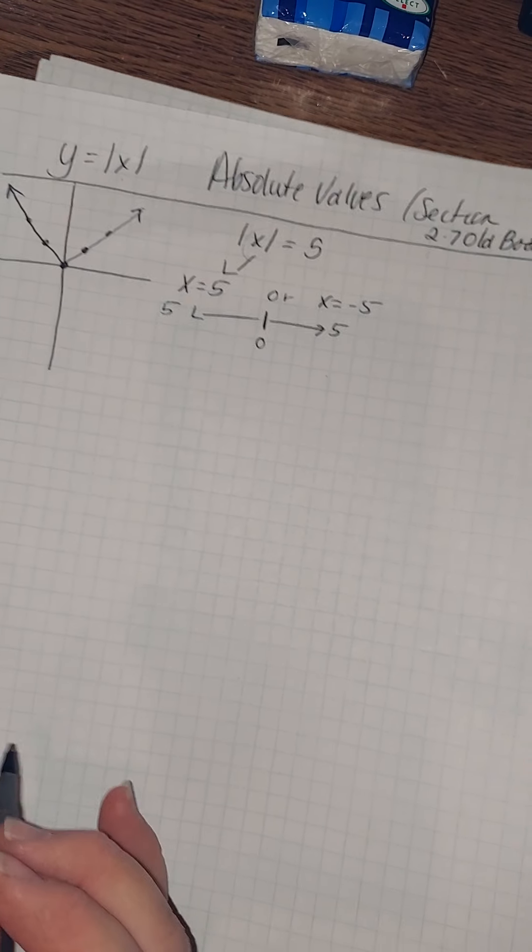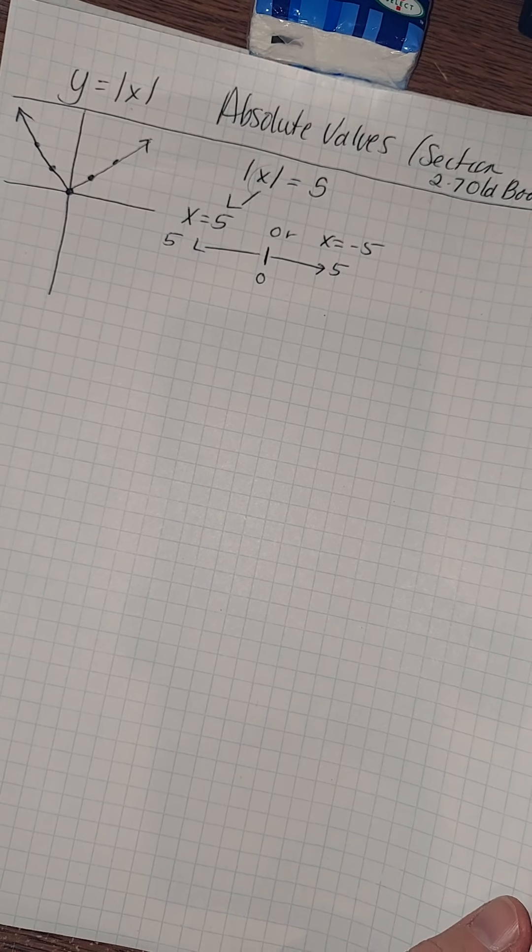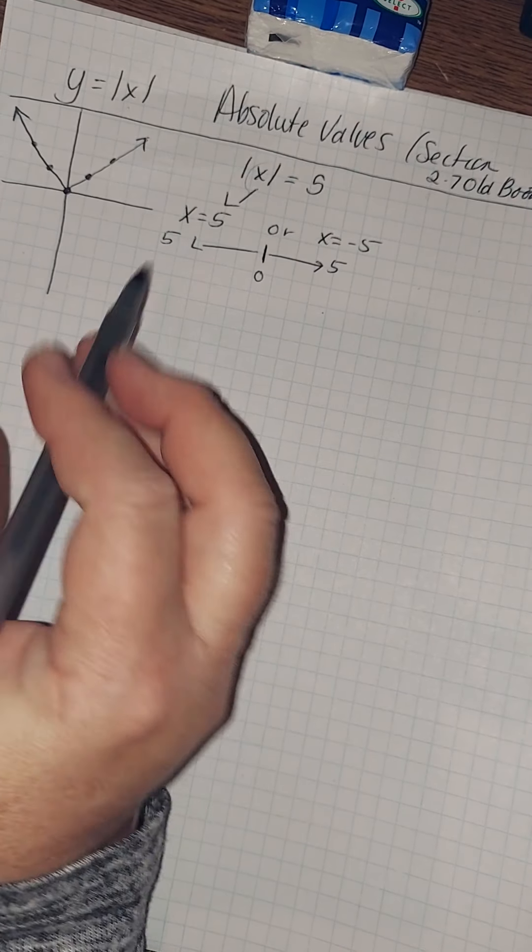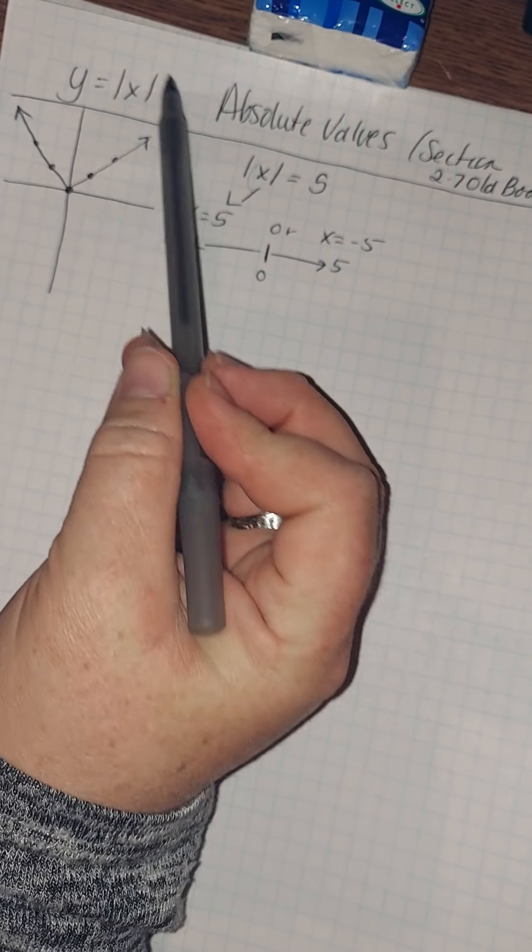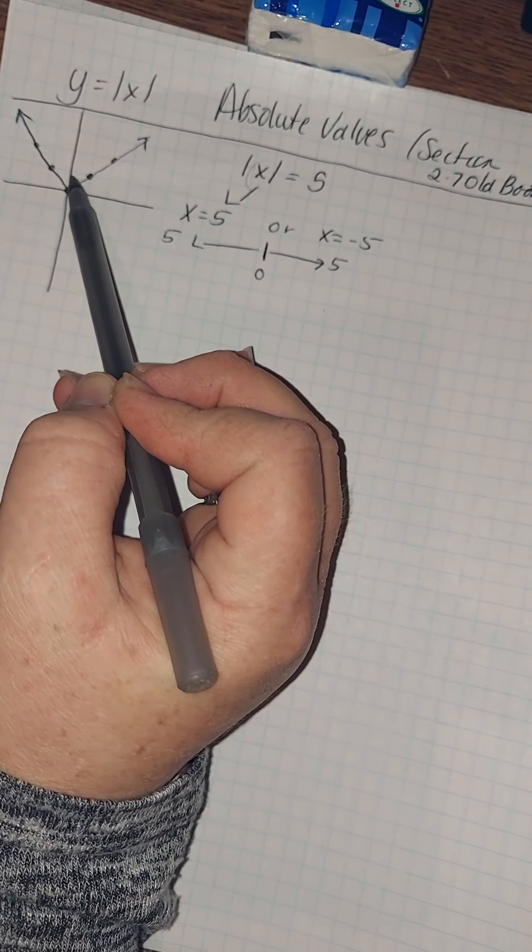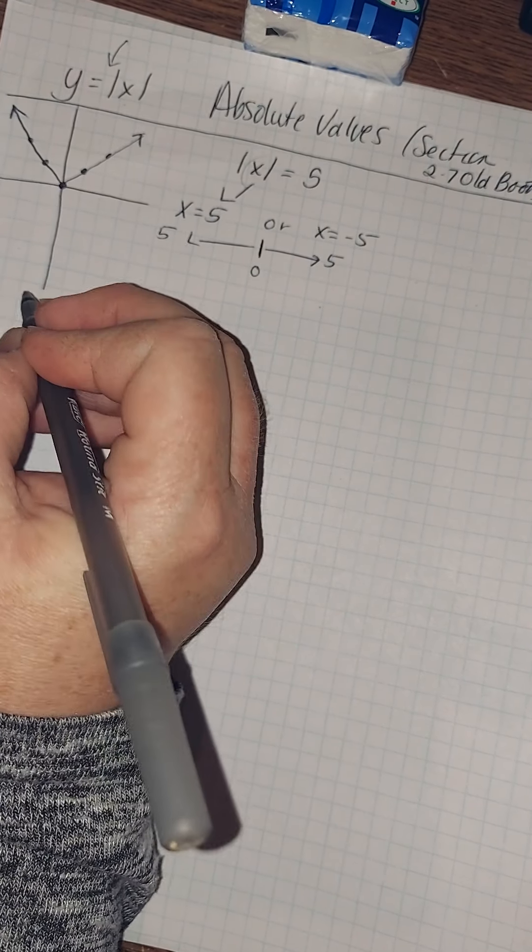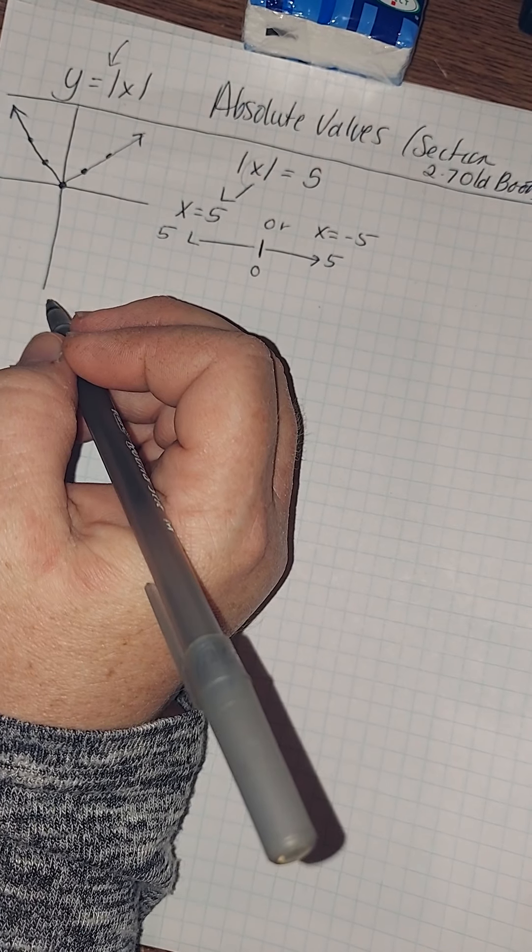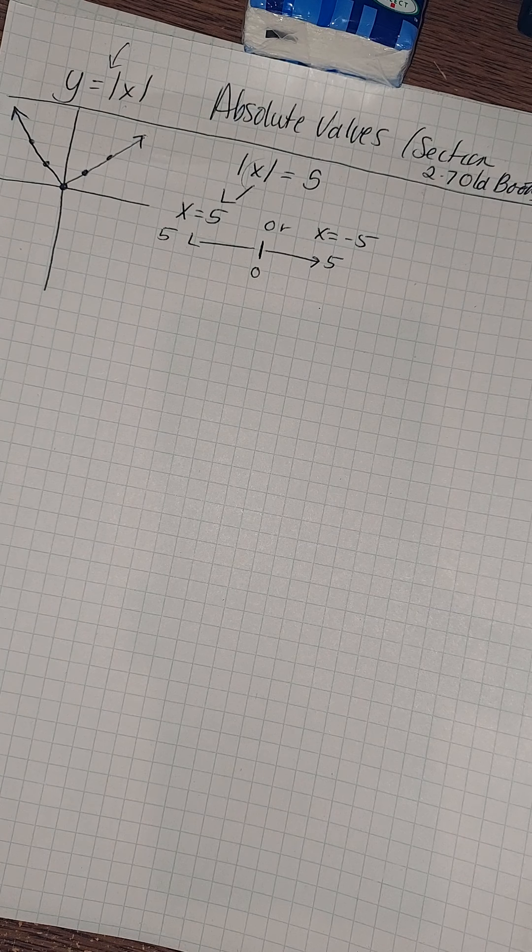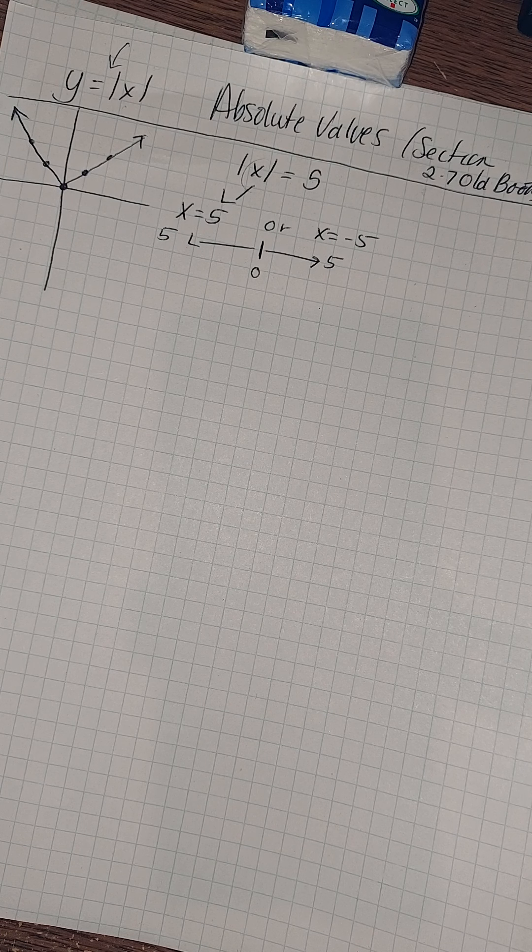So now what we want to look at is really translating. Using what we know, notice that our slope here is 1 as it comes up. That's because there's a 1 right there in the front. So we really want to talk about what do we do when we start manipulating these graphs.